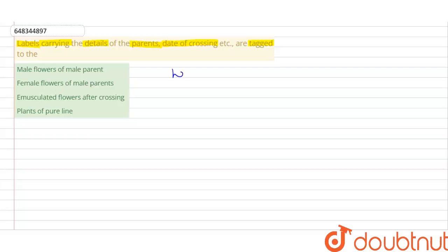The labels contain specific information — details of the parents, meaning which male and female parents are being used, what the date of crossing was, and so on. All this information is written on the label, and then that label is tagged to the relevant flower.